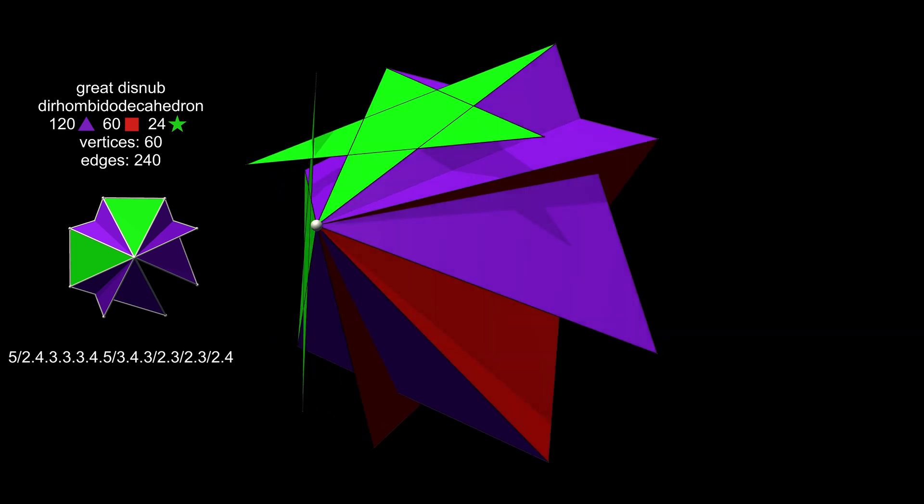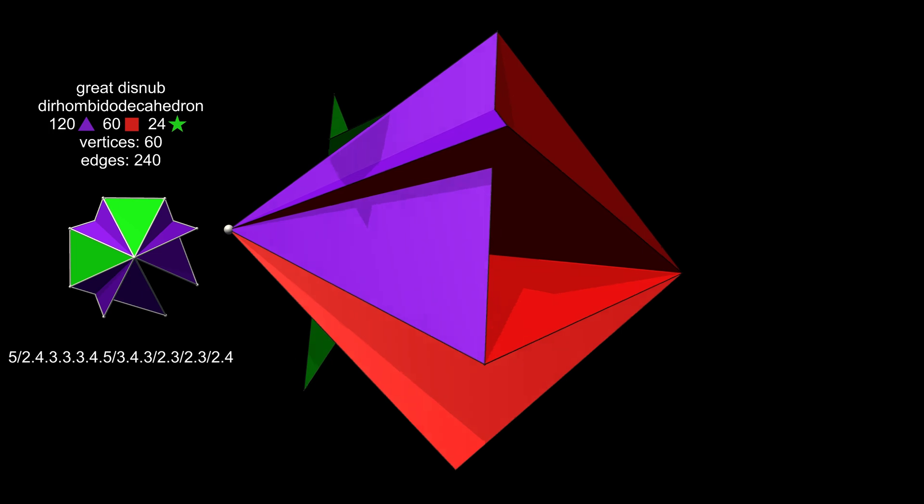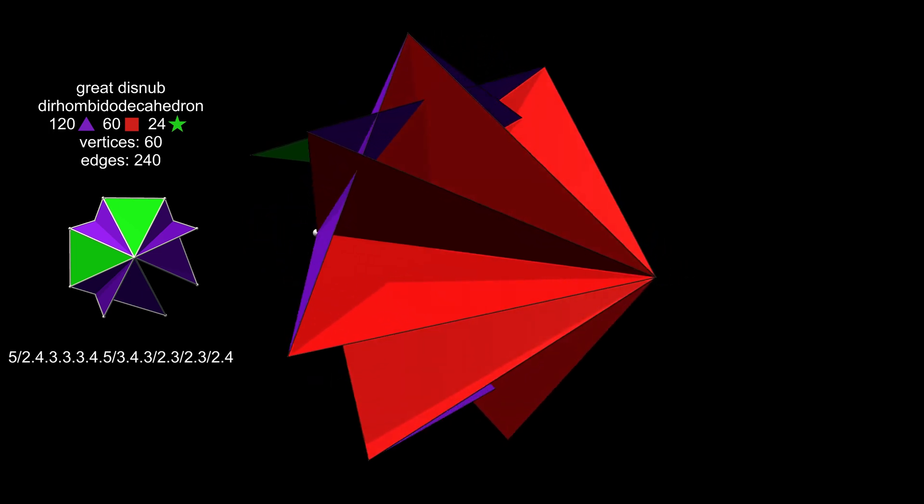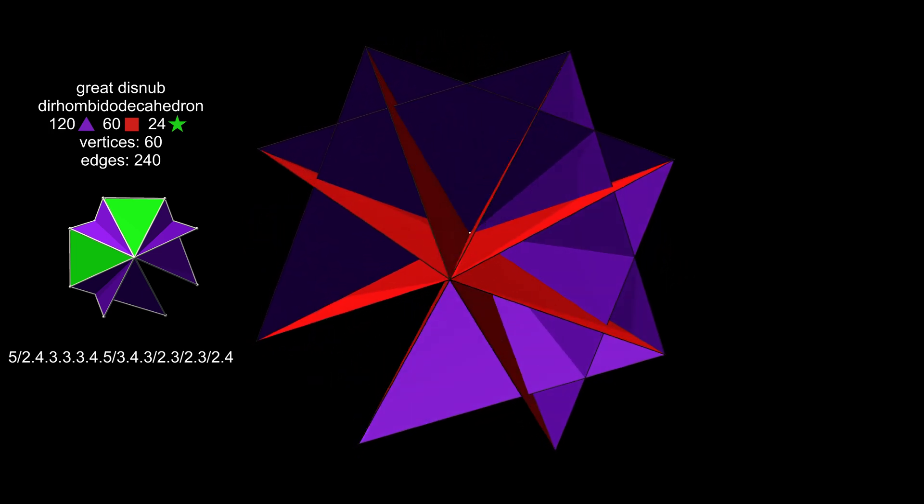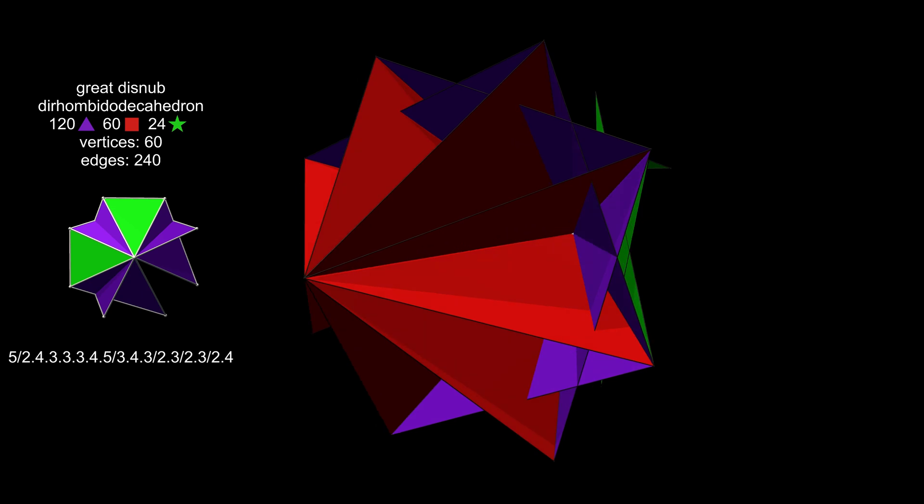The squares are mostly hidden from view, but can be seen if we view the vertex from the inside. From this angle, we can see that this edge borders on four faces: a green pentagram, a red square and two purple triangles.